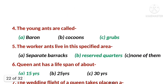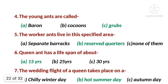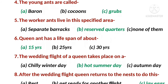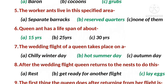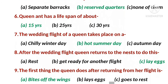MCQ 4: The young ants are called - option C - grubs. MCQ 5: The worker ants live in this specified area, and the right option is B - reserved quarters. MCQ 6: The queen ant has a lifespan of about - the right option is A - 15 years.